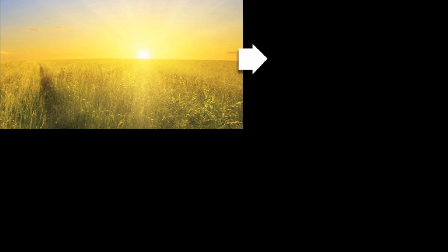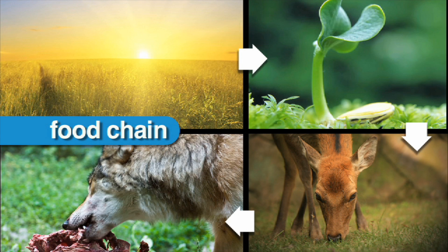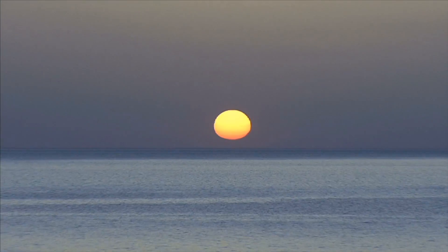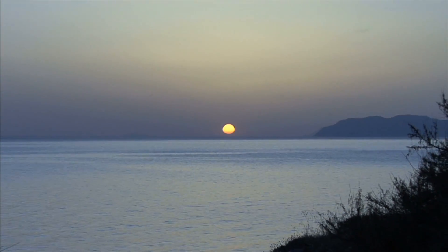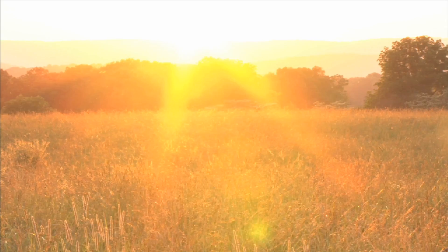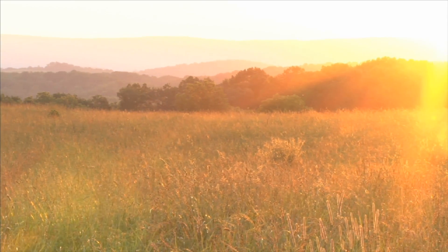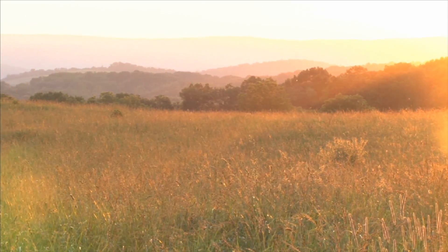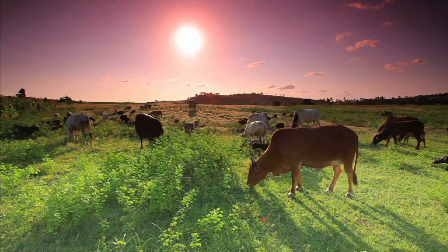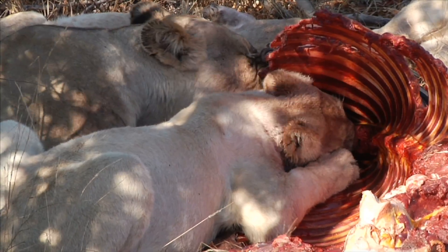To better understand how living things get energy, we use a food chain. A food chain shows the relationship between the plants and animals in an ecosystem. All food begins with the sun, which provides energy for everything on our planet. Plants are producers and are at the beginning of a simple food chain. Plants get energy from the sun. Next in the food chain are consumers — herbivores, carnivores, and omnivores.